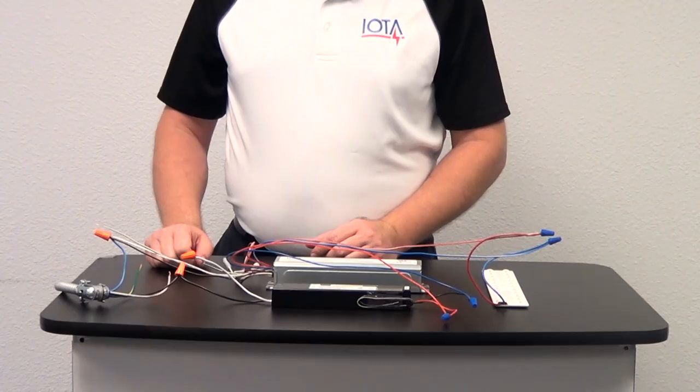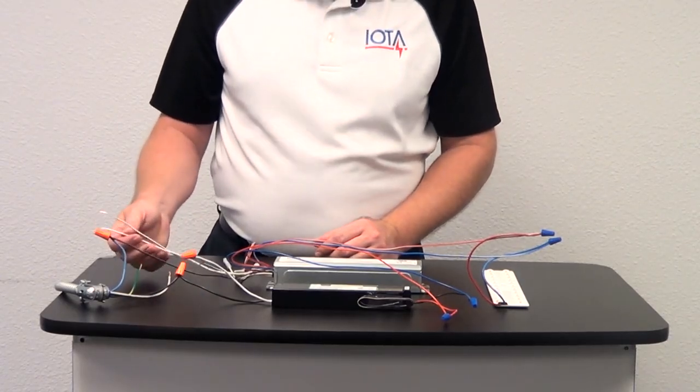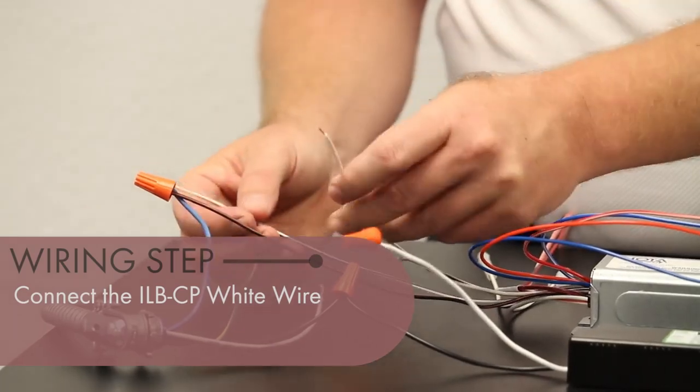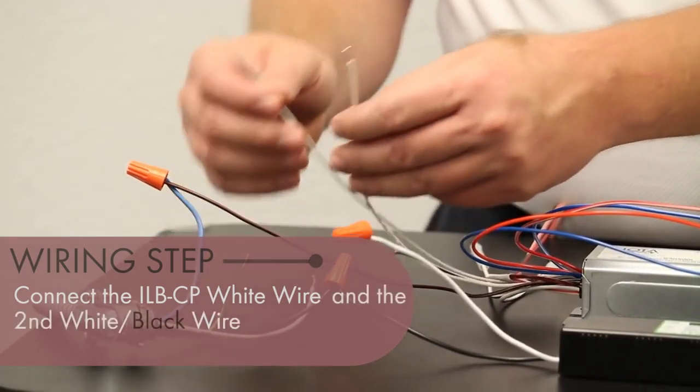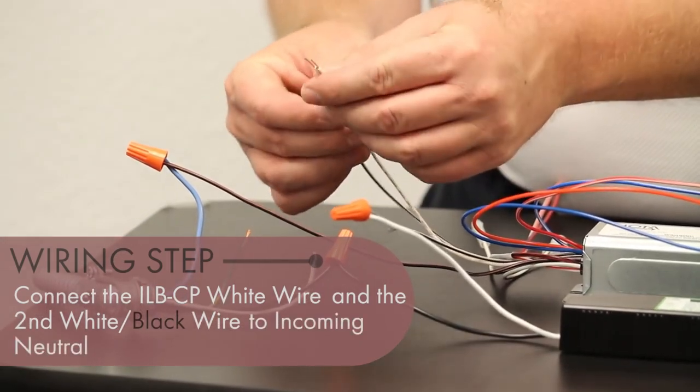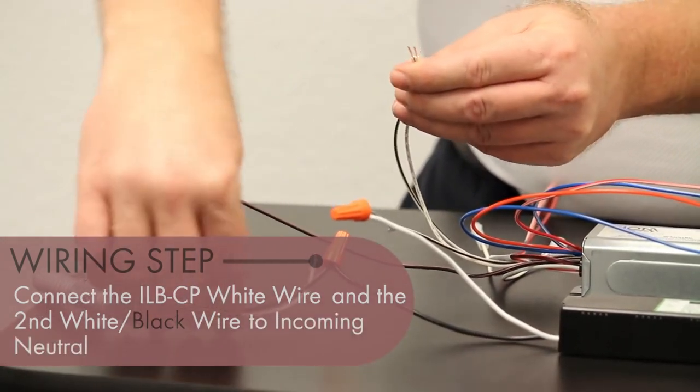The next connection we will make will take two connections, the remaining white wire, and the second white-black wire that we did not use to connect to the normal driver. These will be connected together with your incoming neutral.